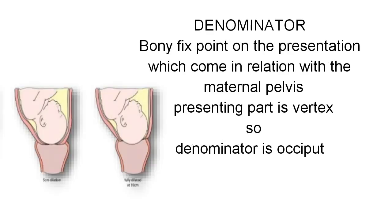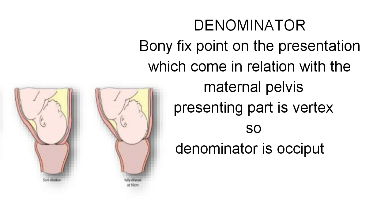The fourth one is the denominator. Denominator is the bony fixed point on the presentation which comes in relation to the maternal pelvis. Here, the presenting part is vertex, so the denominator is the occiput.